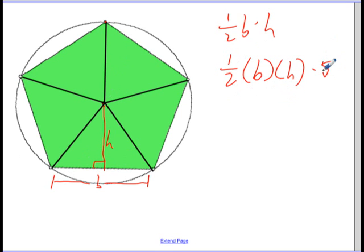Well, I'm going to reorganize this formula a little bit. So I'm going to rewrite it as one-half times the height times the base times five. Well, why did I do that? What is the base, the length of the base, multiplied by five, the number of sides? Well, if you look carefully, that's base, base, base, base, base. That's just the perimeter of that polygon.